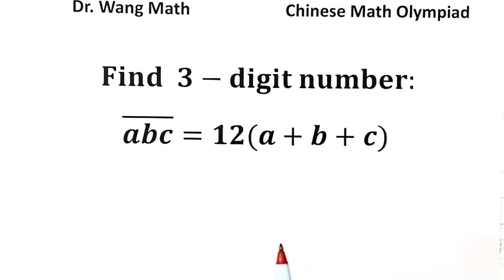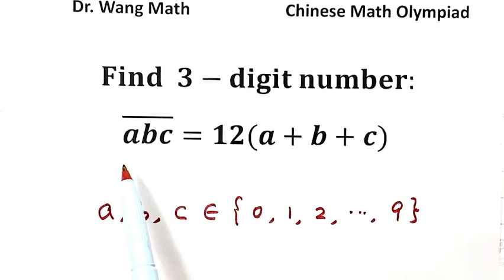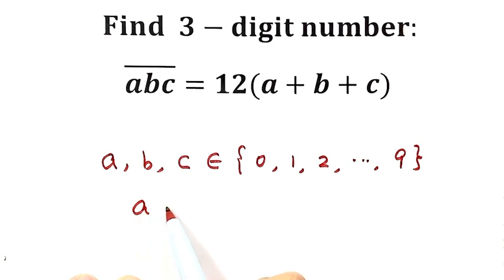Now let's see how to solve this question. First, the three digits A, B, C are elements of the set {0, 1, 2, ..., 9}. Because A is the first digit of the three-digit number, A cannot be 0.